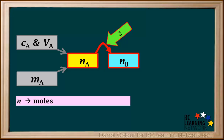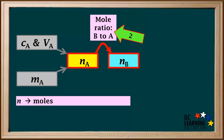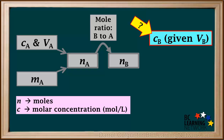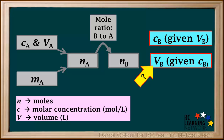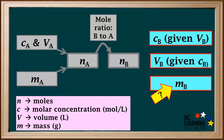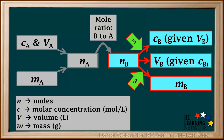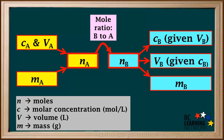Step two of any titration calculation is to convert moles of reactant A to moles of reactant B, using the mole ratio, or coefficient ratio, of B to A in the balanced equation. We could be asked one of three different things for reactant B: the volume of B to find its molar concentration CB, the concentration of B to find its volume VB, or the mass of B in grams. Step three is to convert moles of B to whatever we're asked for. Here is a generic diagram outlining the possible steps in most titration calculation problems. Remember, the first step is always to find moles of what we can.